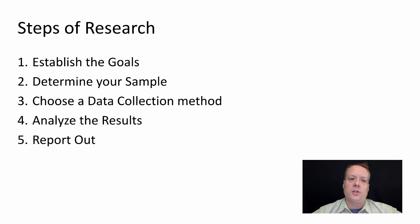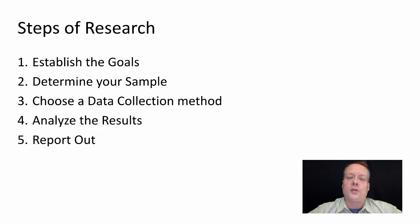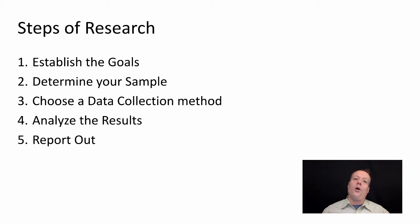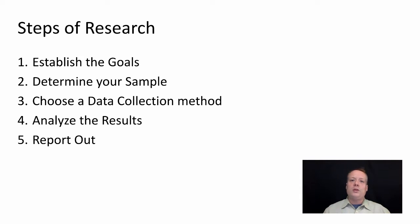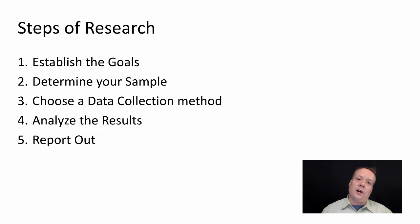So how do you address the concept of marketing research? There are five basic steps of marketing research that you should work through, and these five steps help you to systematize the process. First, you need to establish the goals — what question are we going to answer? Then, once you've identified the goal, you can determine your sample — who is relevant to answering that question? Then choose a data collection method from all the possible methods available, analyze the results, report out, and repeat the process again.